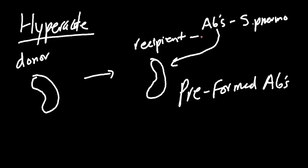When those antibodies attack the donor organ, you're going to have destruction of the vasculature. The antibodies attack the endothelial layer of the blood vessel, causing necrosis, fibrosis, and ischemia. None of this happens until the blood supply is connected — the arteries, the renal veins — everything has to be in place first.